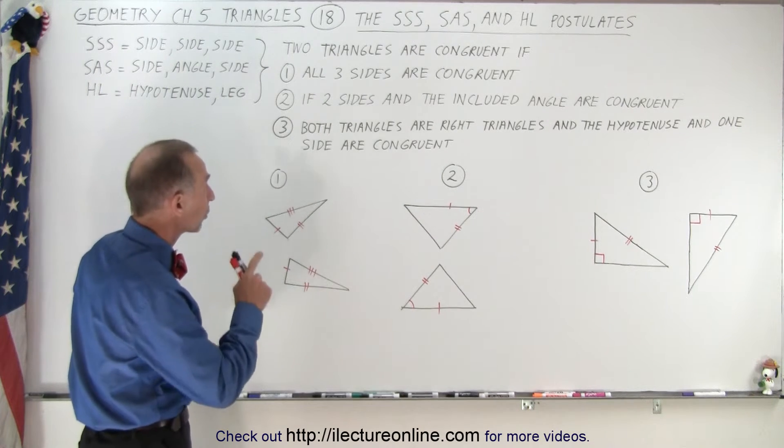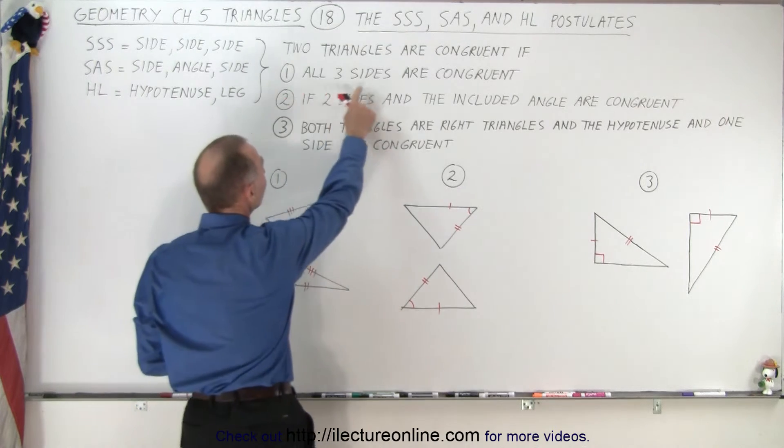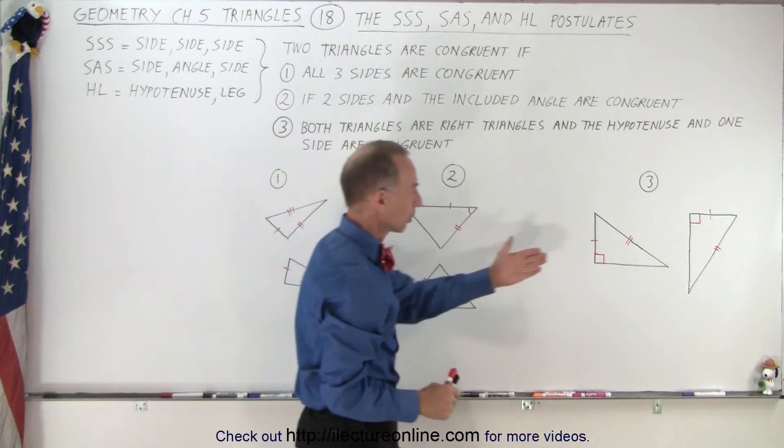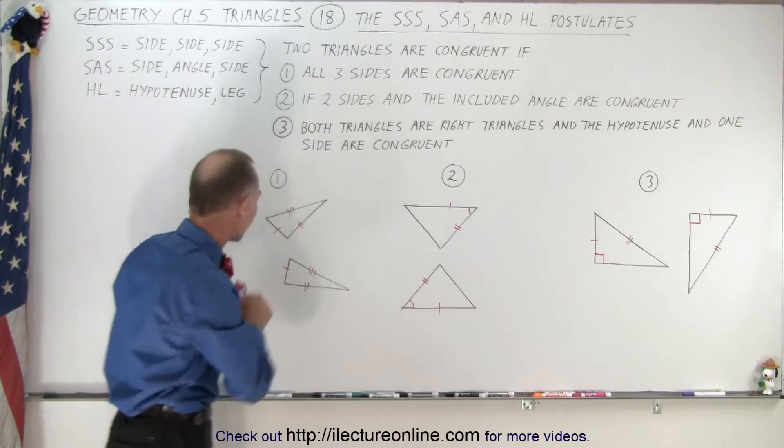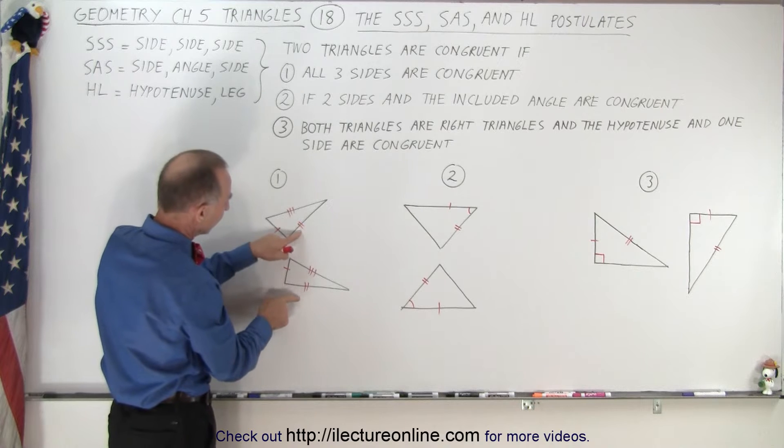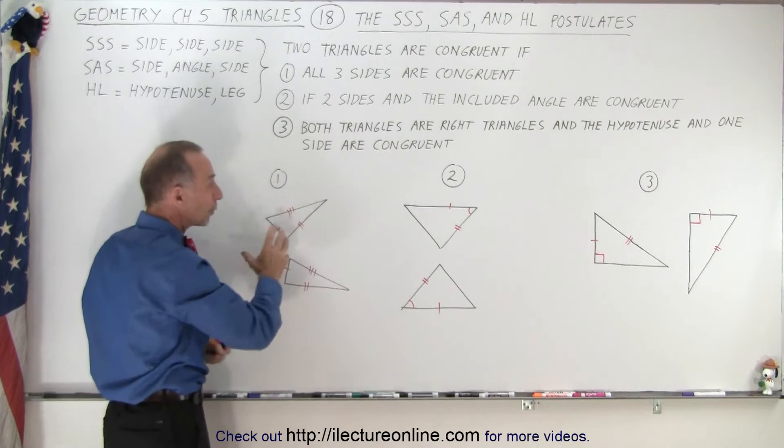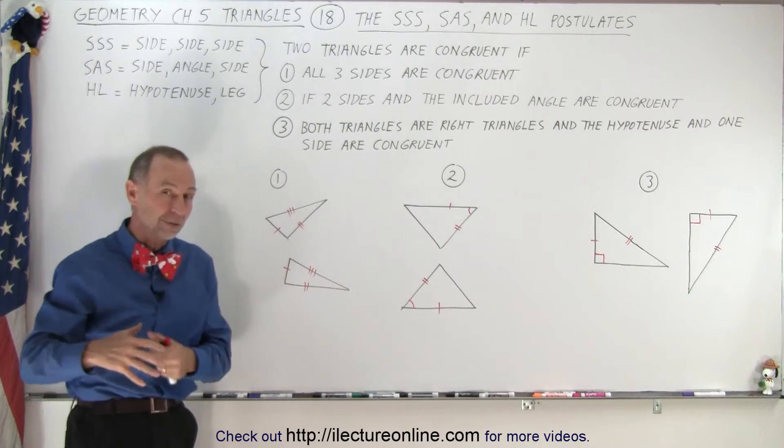Two triangles are congruent if the first postulate says all three sides are congruent. So if we take a look at our example right here, notice that these two sides are congruent, these two sides are congruent, and those two sides are congruent. If all three sides are congruent to the three sides of another triangle, both triangles are congruent.